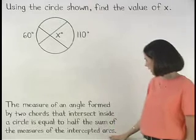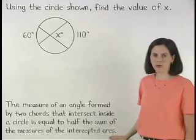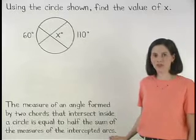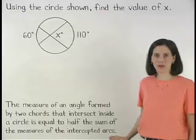And remember that the measure of an angle formed by two chords that intersect inside a circle is equal to half the sum of the measures of the intercepted arcs.